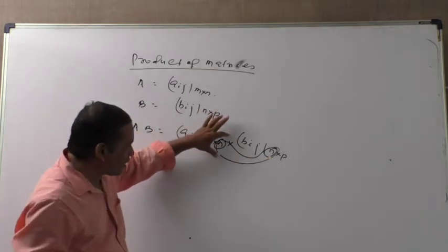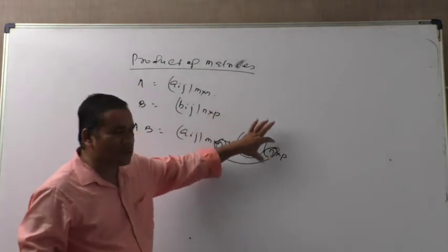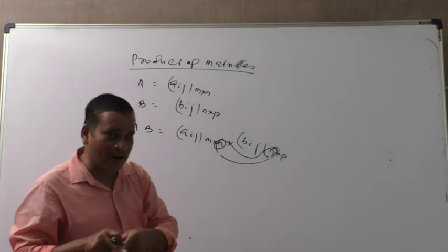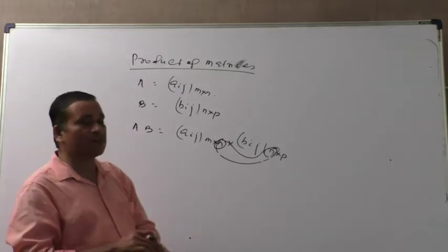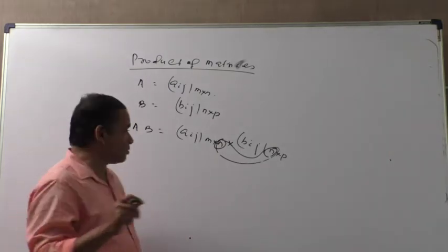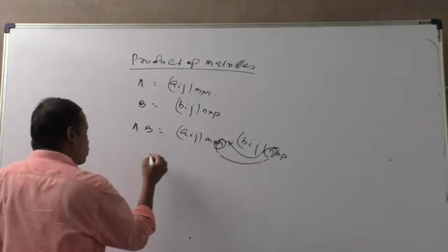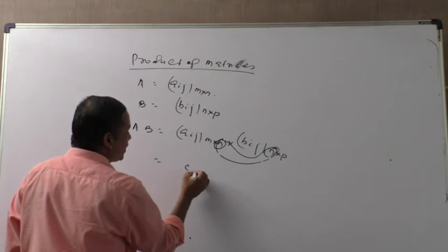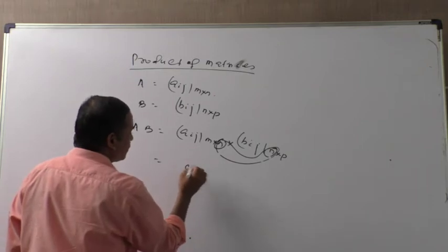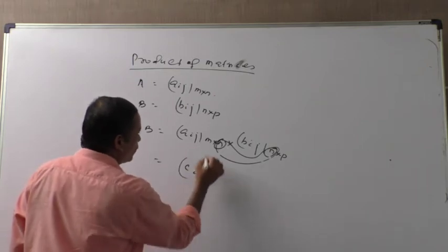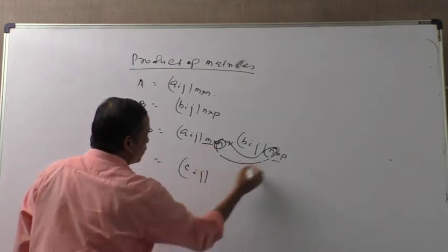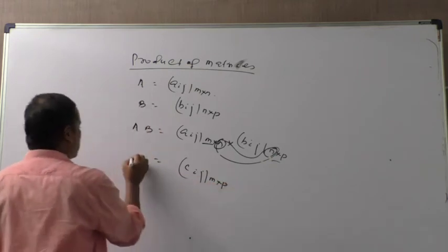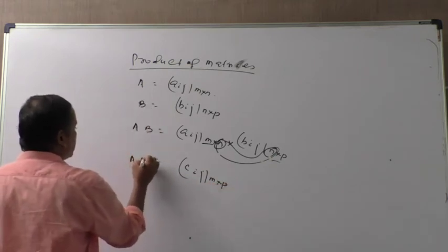The column of the first matrix must be equal to the row of the second matrix. When rows and columns are equal, matrix multiplication is possible, and the output matrix C(i,j) will be of order M cross B.